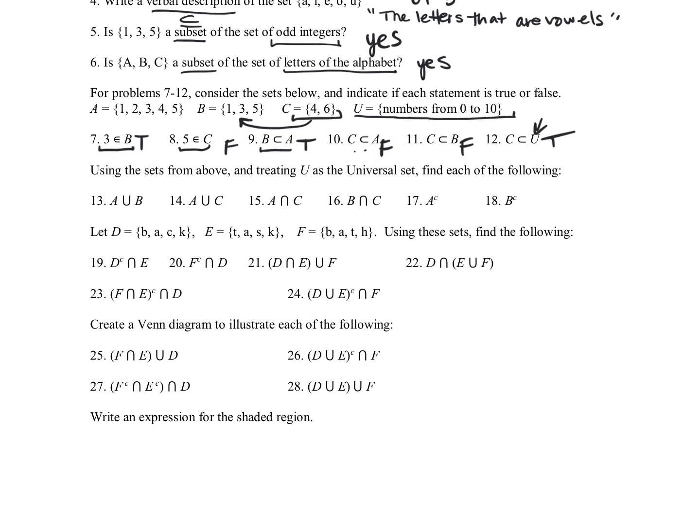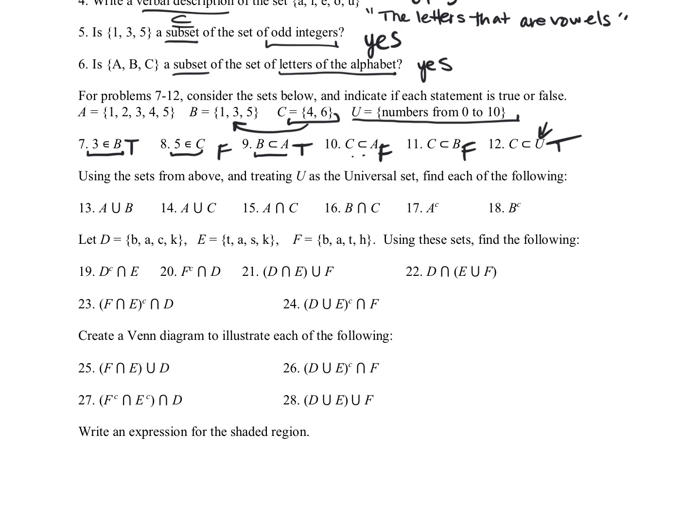For thirteen through eighteen, we're still using the same sets that we were just looking at. So for A union B, that's looking at all the elements that are in A or B. So we're going to have, of course, one, two, three, four, five, because that's set A. And then for B, one we already have in here, three we already have in here, five we already have in here. So it's going to be just that: one, two, three, four, five.